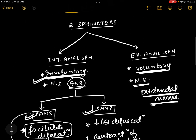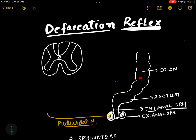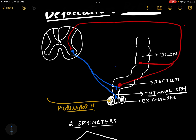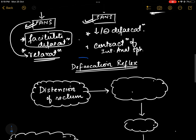Apart from the motor supply, there are sensory nerves as well. Sensory nerves are distributed all over the rectum and colon. These sensory nerves travel to the spinal cord through the dorsal horn, entering the spinal cord. From there, fibers of the autonomic nervous system arise and supply the internal anal sphincter.